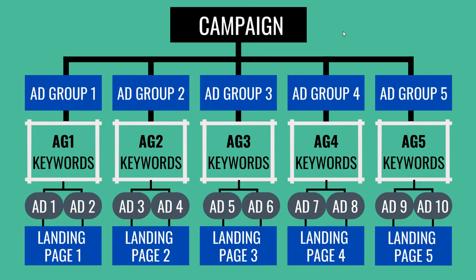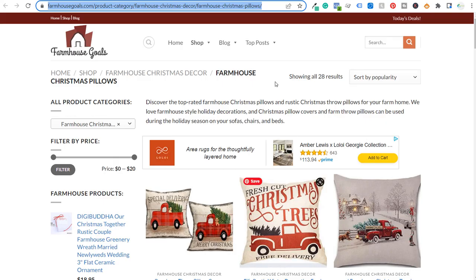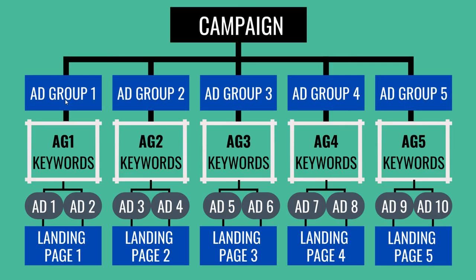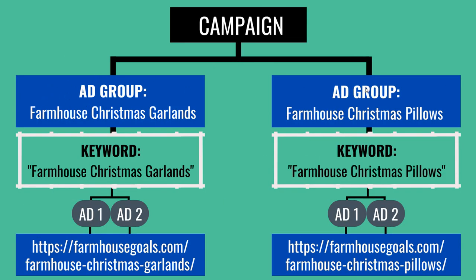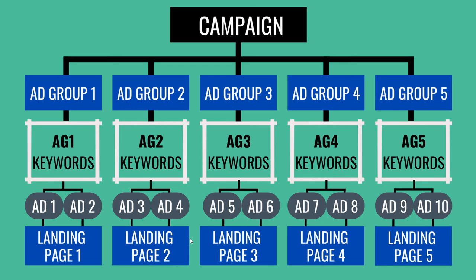This approach also benefits your SEO strategy — creating separate pages for different products is better than one large page with everything on it unsegmented. To summarize the campaign structure: you have your ad group, your keywords, your advertisements, and they send traffic to a landing page. You don't need a ton of keywords or tons of ads — you get 15 headlines per ad for plenty of copy to test. Just make sure potential customers are seeing highly relevant offers based on what they're searching for. If you have any questions, leave them in the comments, and make sure you subscribe to the Surfside PPC YouTube channel.